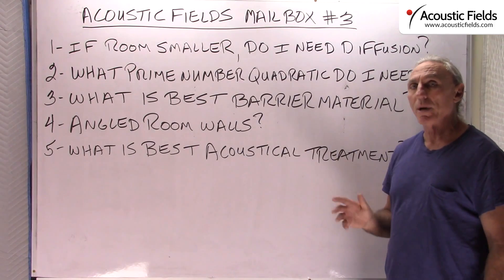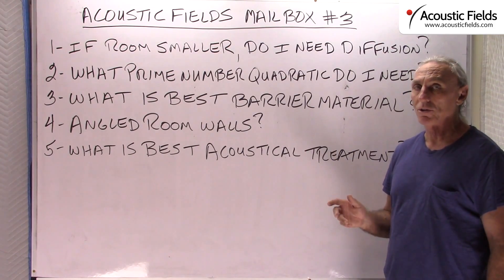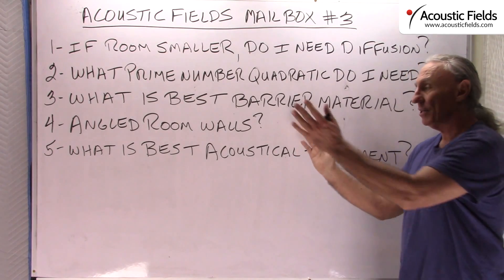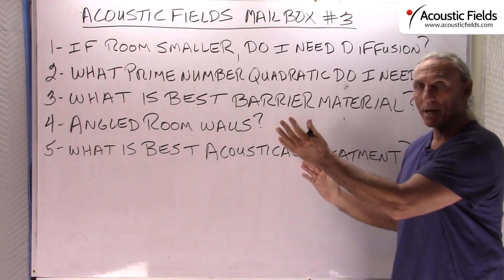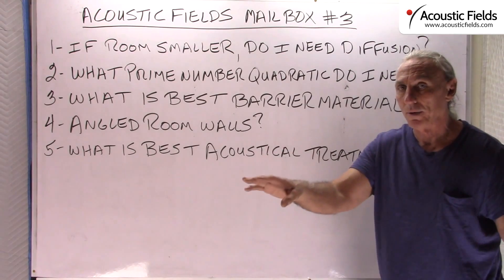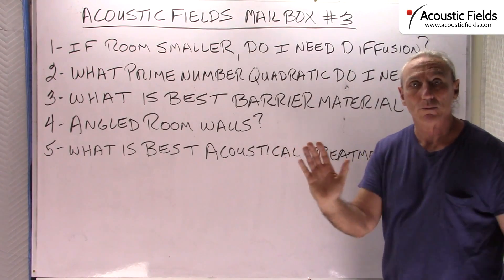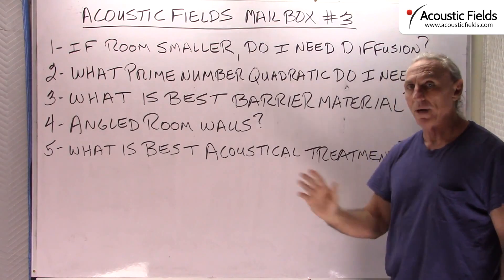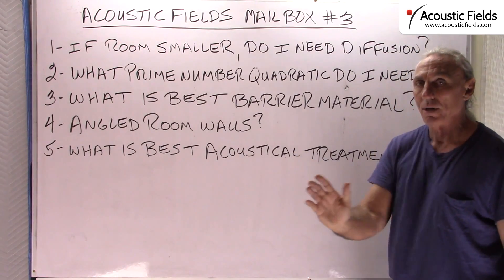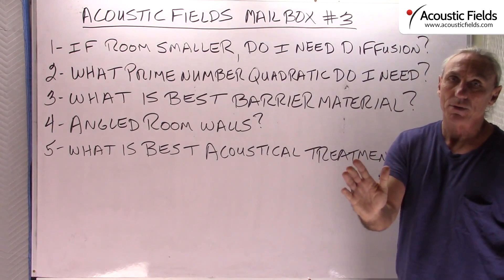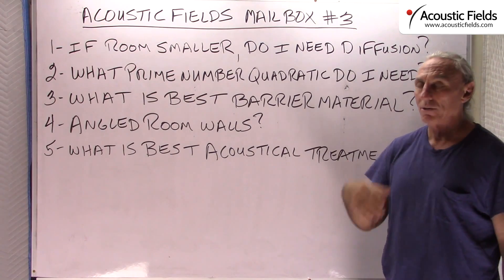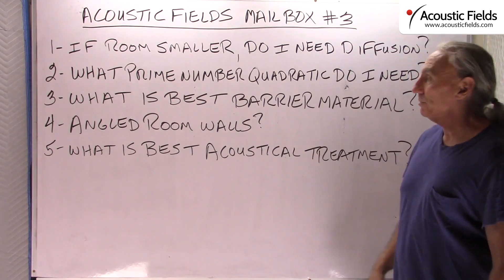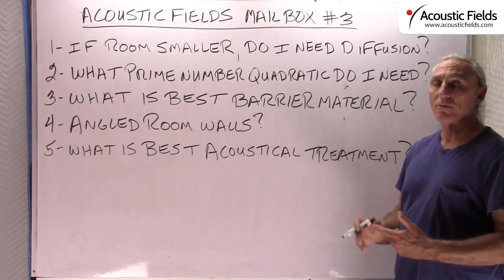If your room is smaller, do you need diffusion? Absolutely. You must calculate the correct prime number sequence of diffusion to use, because you must have enough distance for the energy that goes into the diffuser to come back out and fully form. All those rays have lengths and they need to run out at least a quarter of their full life distance so you don't have any distortions. Yes, if the room is smaller you need diffusion — you just have to choose the right type.